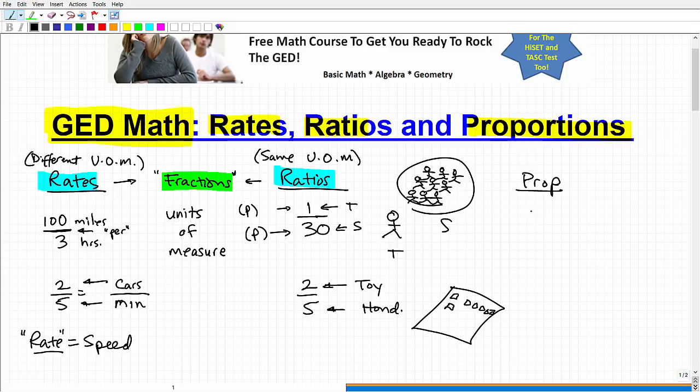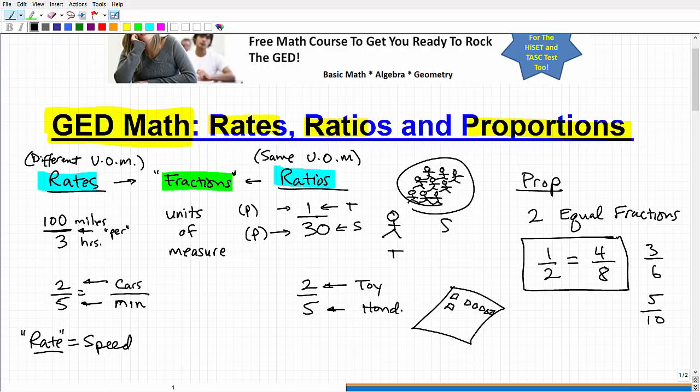And proportions are nothing more than two equal fractions. So, I'm going to write a fraction down here. Let's say the fraction one-half. Now, I want you to think to yourself, can you come up with a fraction that is equal to one-half, but is different than one-half? It's not the actual fraction one-half. Give me another fraction that's equivalent to one-half. You might be saying to yourself, how about four over eight? There's all types of one. You could have three over six. You could have five over ten. Fifty over one hundred. I think you kind of get it, right? So, here I have two equal fractions. That is a proportion.